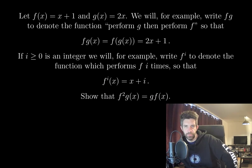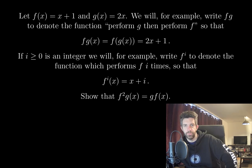Let f of x equal x plus 1 and g of x equal 2x. We will write fg to denote the function: perform g then perform f, so that fg(x) is equal to 2x plus 1.